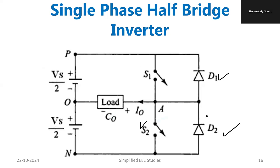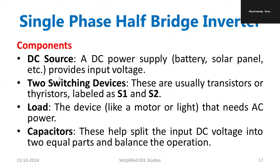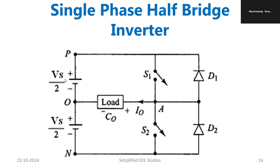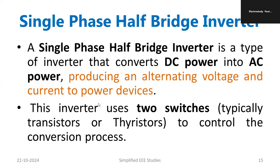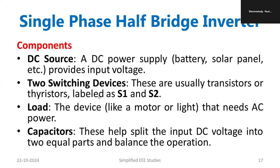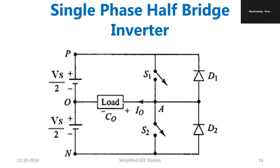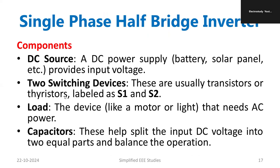Those are the basic details about the circuit diagram of the single-phase half-bridge inverter. The components are: a DC source (which is split), two switching devices S1 and S2 (which can be MOSFET, IGBT, or thyristor), a load (which can be a motor load or light load — usually a light load for this configuration), and a capacitor to split the input voltage into equal parts so that the operation remains balanced.